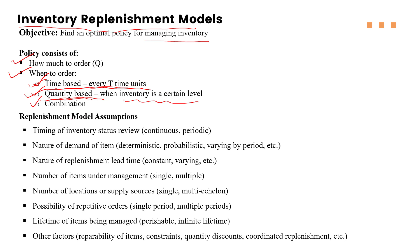Whenever we are going to select the inventory model, there are certain key elements on which basis we can pick the particular model, such as the timing of the inventory status review. If you are ordering after every two months, the time is fixed — that is the periodic review system. But in a continuous model, we are monitoring the quantity of the product, and when it reaches a certain level, we place the order — that is the continuous inventory model.